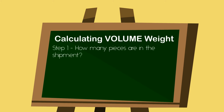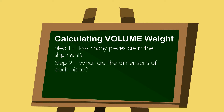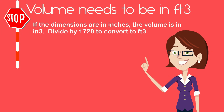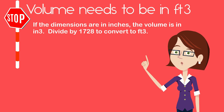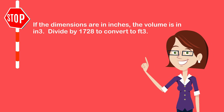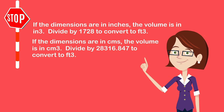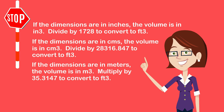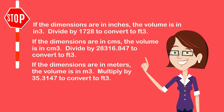Once the actual weight is in pounds, you can now calculate the volume weight. Determine how many pieces there are and what the dimensions are of each piece. You will then multiply the number of pieces by the length, width, and height to get the cubic dimensions. Before continuing, you need to convert your cubic dimensions into cubic feet. If they are measured in inches, divide by 1728. If your dimensions are in centimeters, divide by 28316.847.